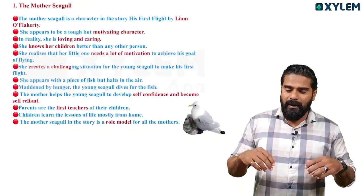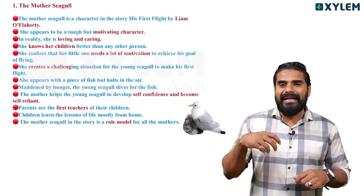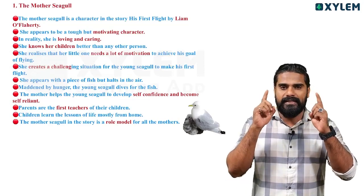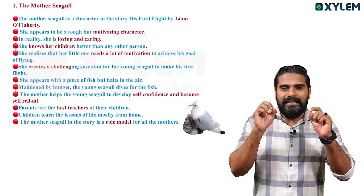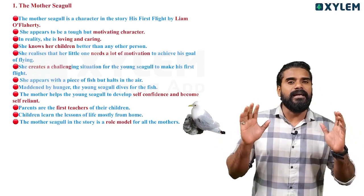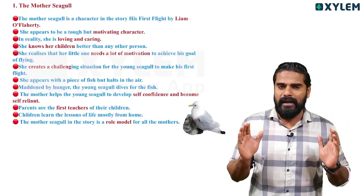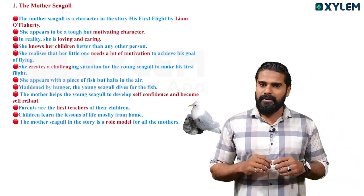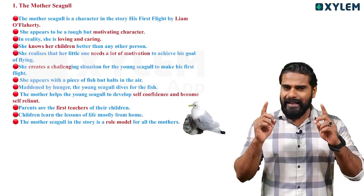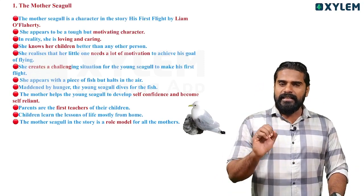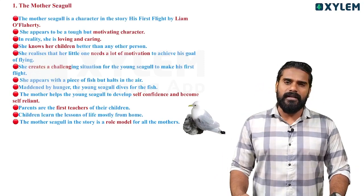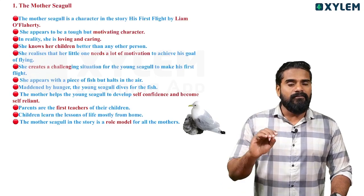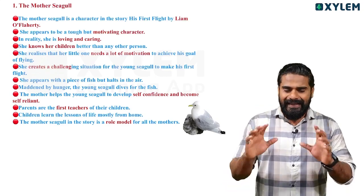I made a clue for everything — each of you, make a highlight. You made a sentence highlighted. The first part is Mother Seagull.